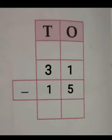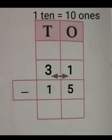Start subtracting the ones. 1 minus 5. As we know, 1 is less than 5. So, we cannot subtract 5 from 1. So, we will borrow 1 ten as 10 ones from the tens place.